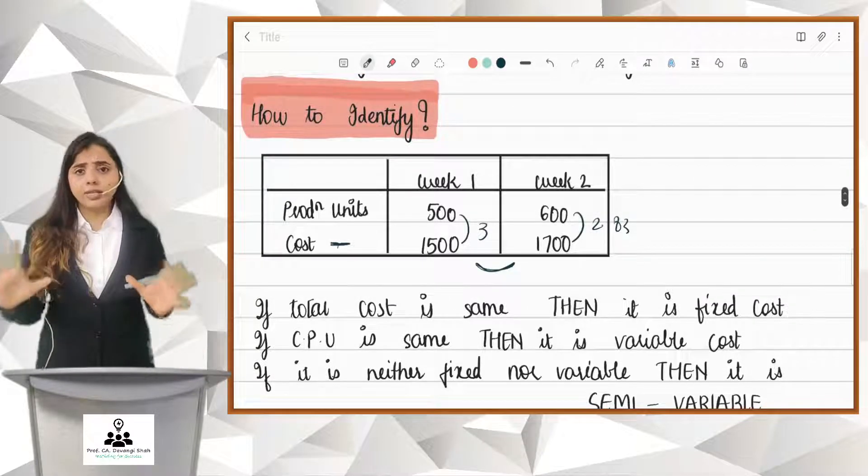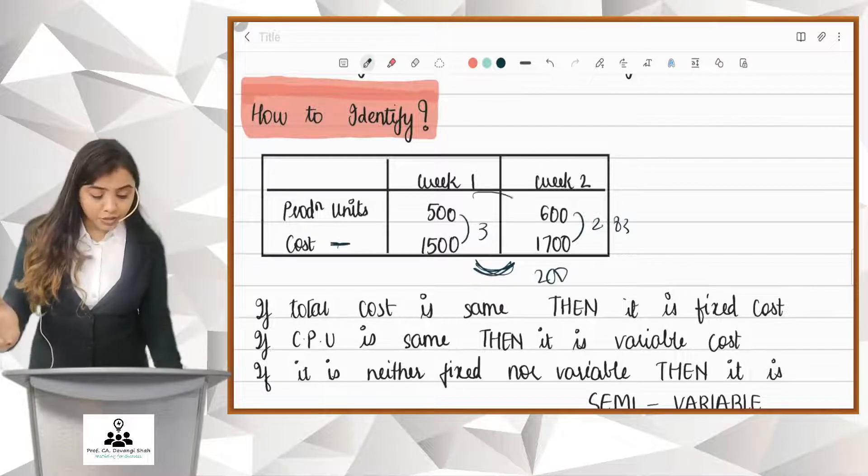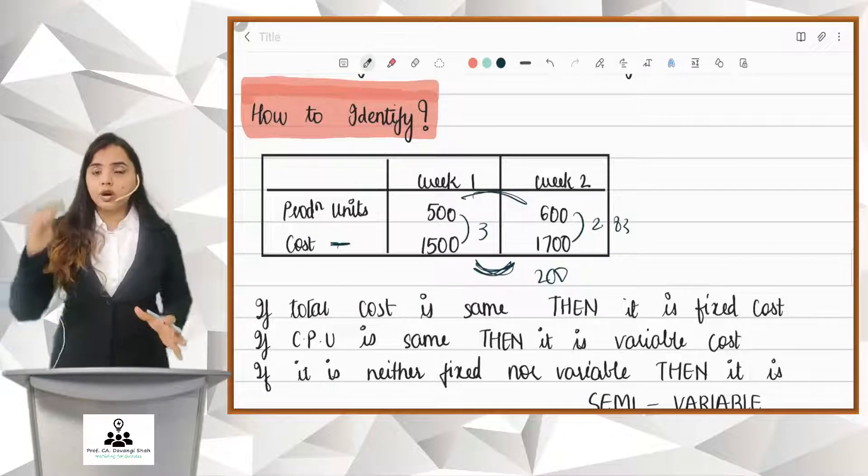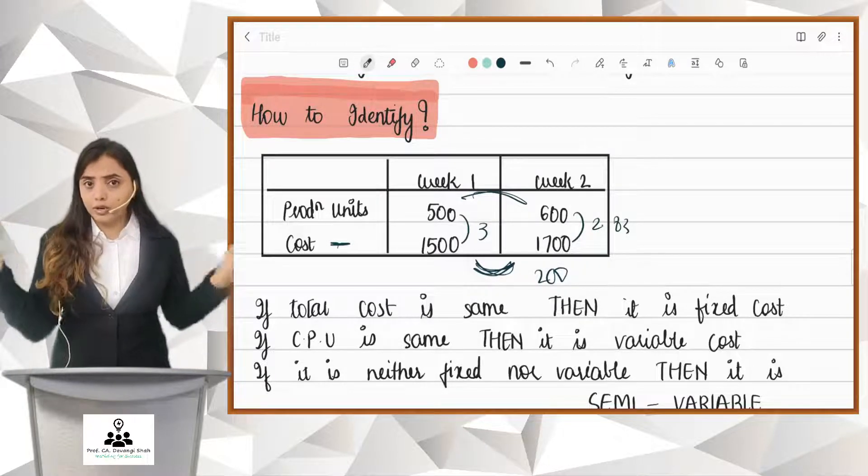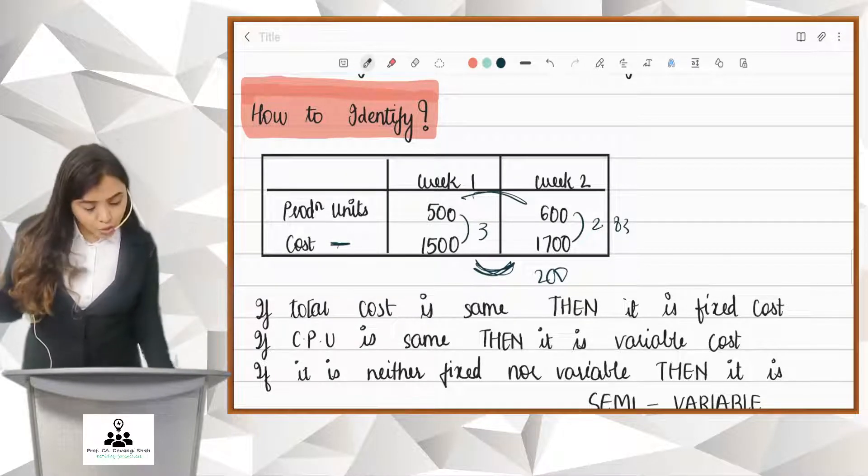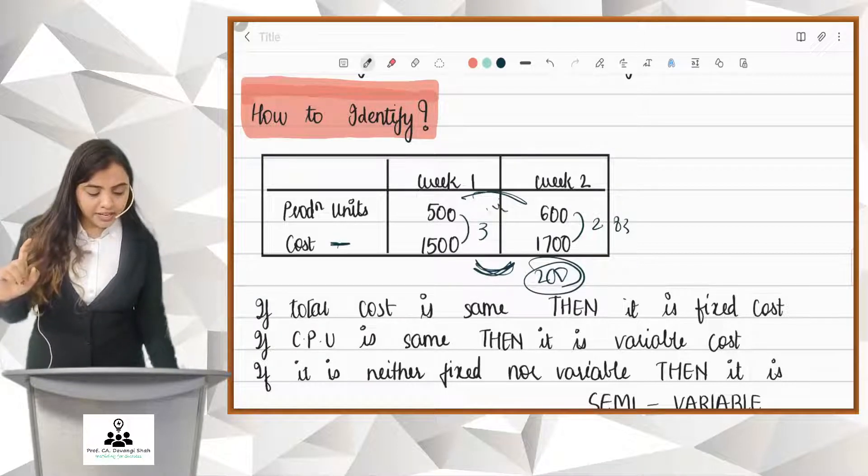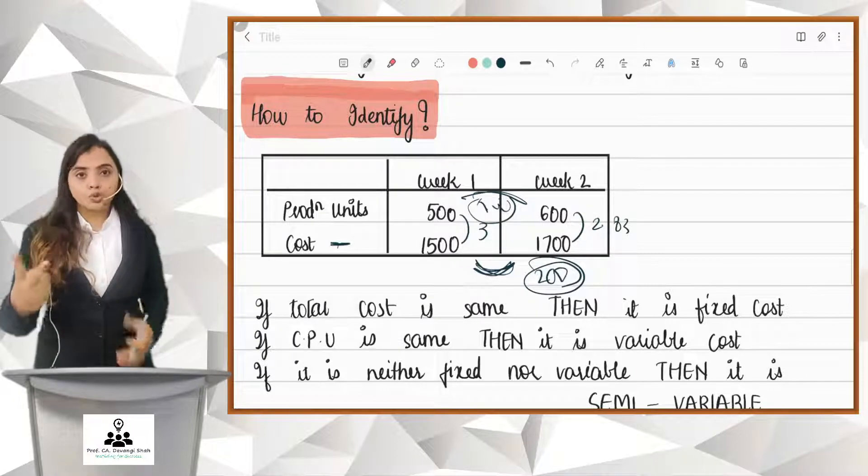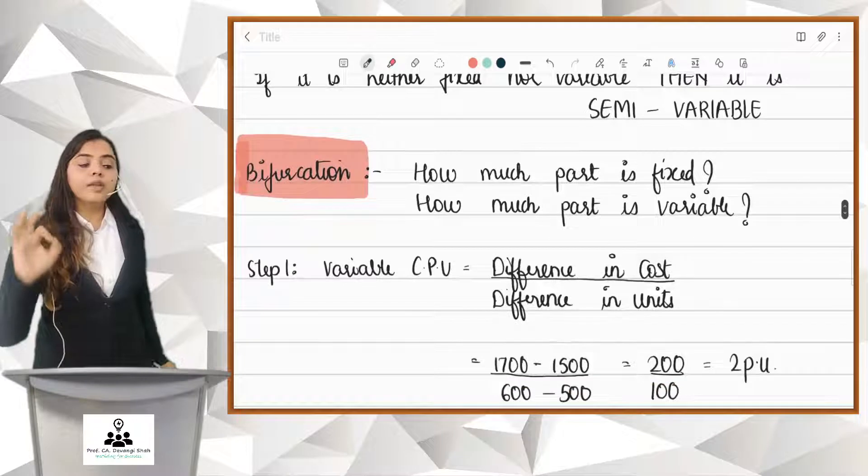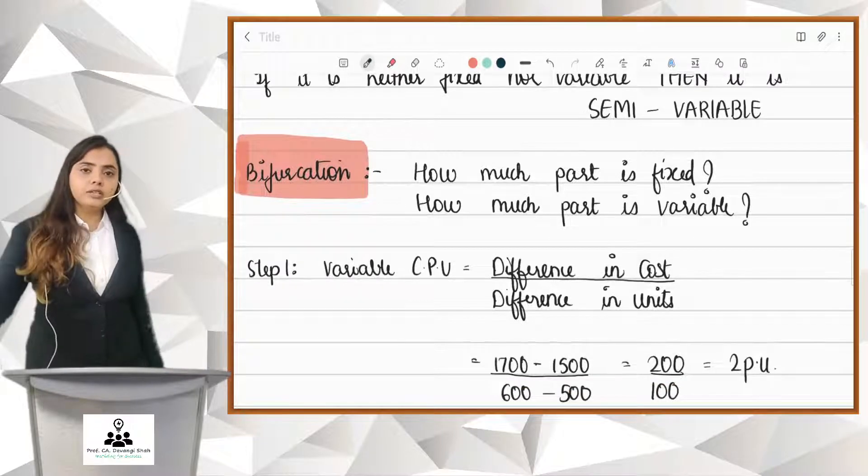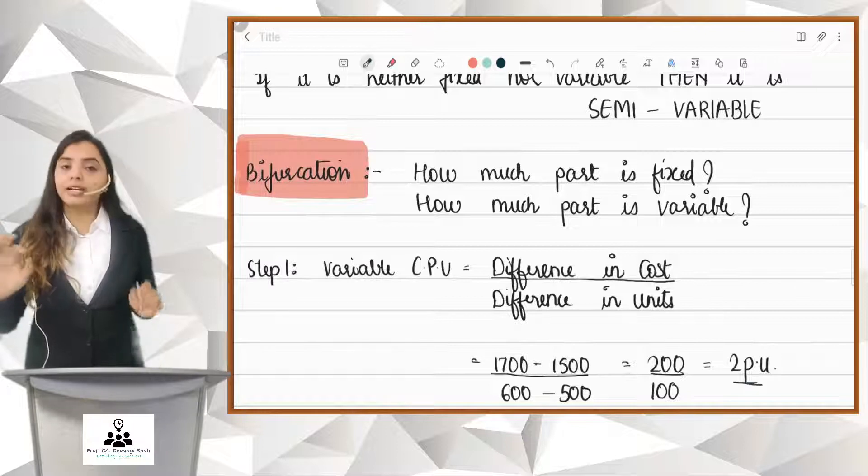My cost is increased by 200. Why? Because my production has increased by 100 and the cost which increases with increase in production has to be variable because fixed cost does not change. So, this 200 is definitely my variable cost for 100 units that I have made additionally. So, per unit it comes to 2, friends. This is step number 1. We find out variable cost per unit by taking difference in cost upon difference in unit. We get 2 per unit as variable.